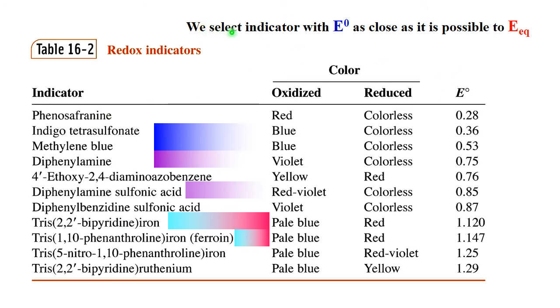We can select indicator with E0 as close as possible to potential of equivalence point. There are a bunch of different redox indicators, which change their color at different values of redox potential. So, for practically any important redox potential, you can find suitable indicator.